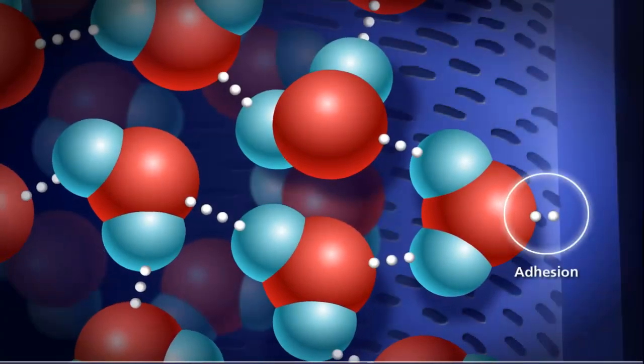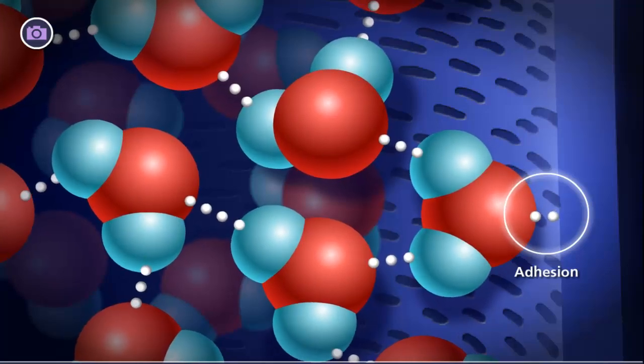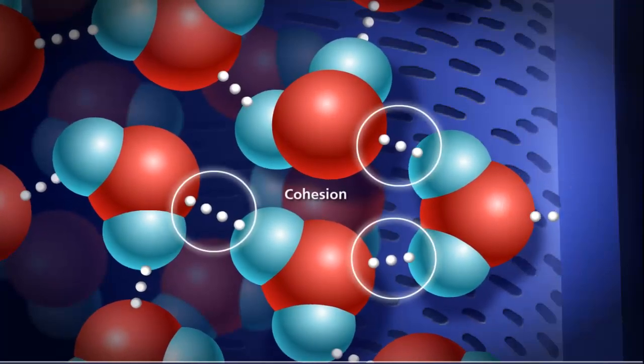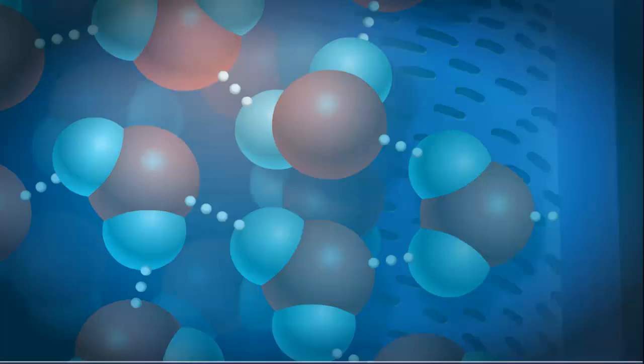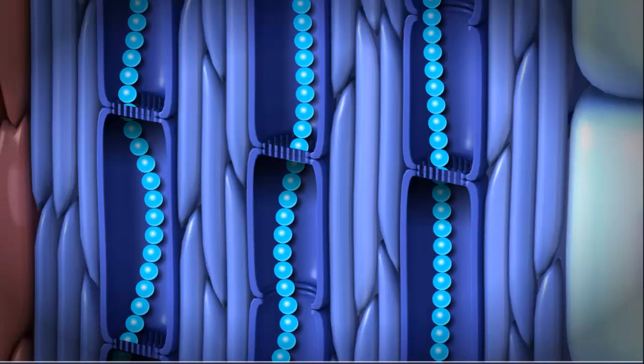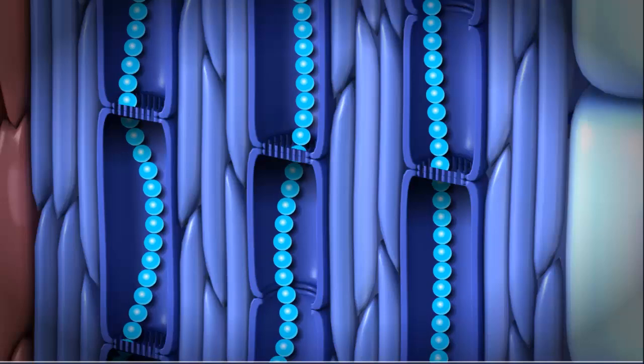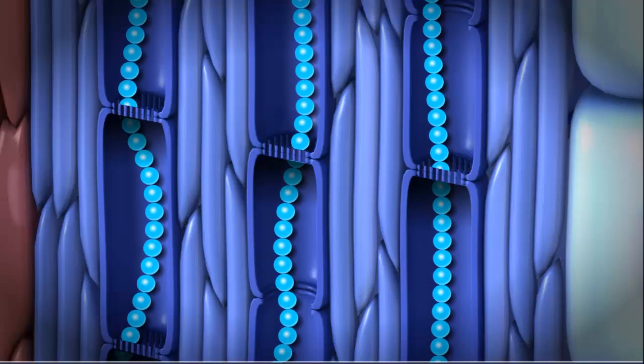Adhesion is the attraction of water molecules to a surface, such as the wall of the xylem. Cohesion is hydrogen bonding between water molecules. Together, adhesion and cohesion allow water to move through the xylem in a continuous stream, from the roots, up through the stem, to replace water lost from the leaves through the stomata.